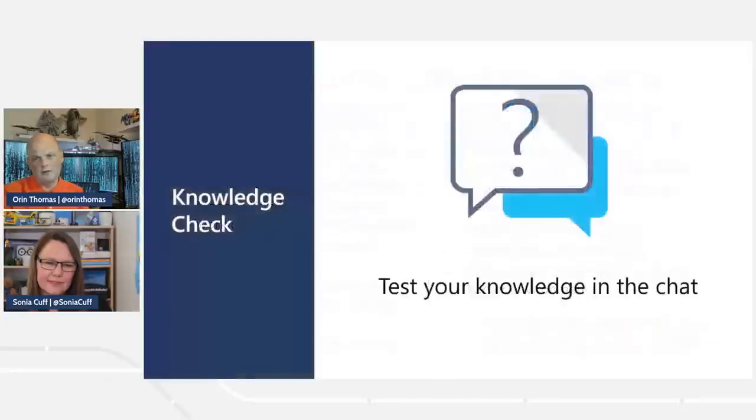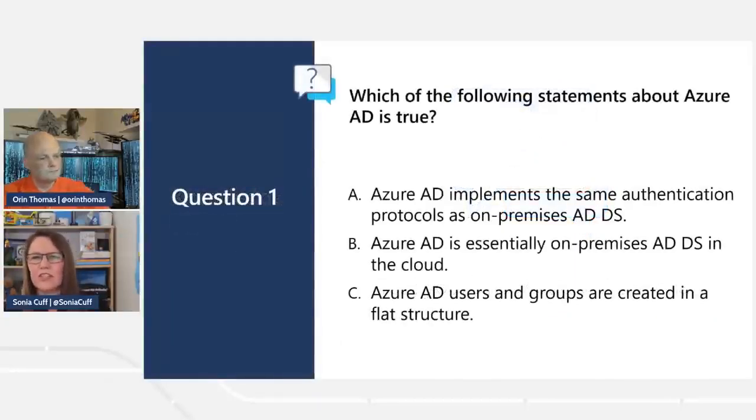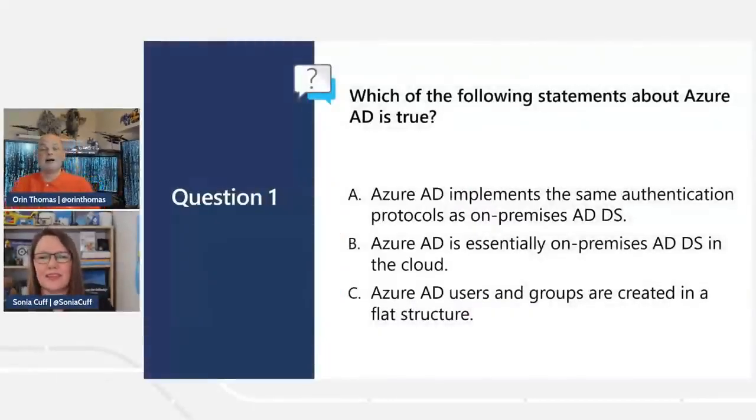A viewer asks: the process shown sets up Azure AD login when the VM is first established — can you turn that on for an existing VM that's already been deployed? The answer is yes, though you'll need to restart the virtual machine for the changes to take effect. Also note that the module was created around six months ago when Windows Server 2022 hadn't been released yet, but you can now use Windows Server 2022 in the Azure portal. Finally, here's a knowledge check question: which of the following statements about Azure Active Directory is true?